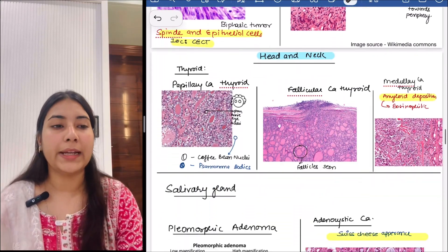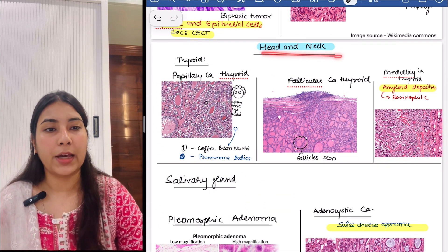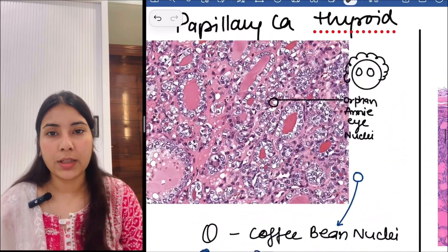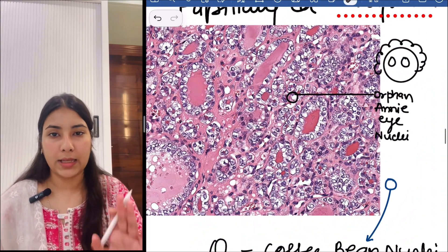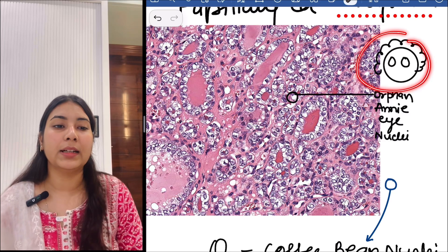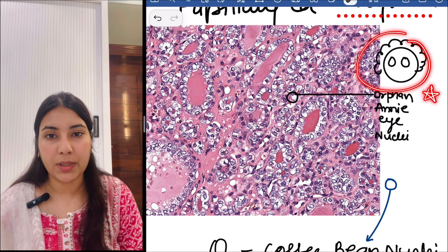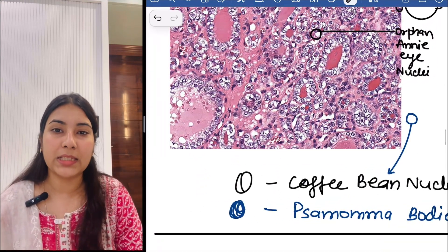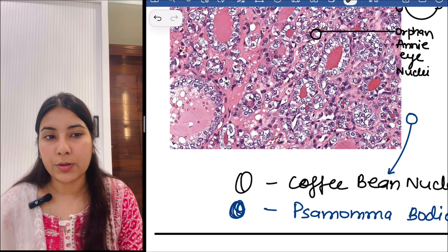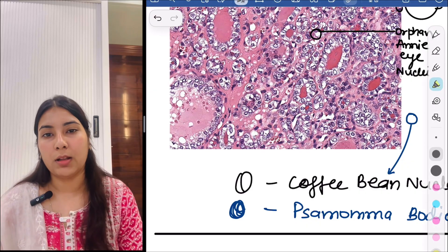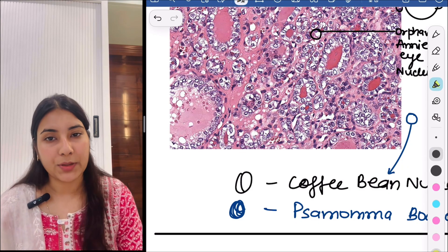Moving forward to head and neck. The first is thyroid. You can see the papillary carcinoma of thyroid — the nucleus is empty, so it is an Orphan Annie eye nucleus. Also we can appreciate that the nucleus has a coffee bean shape. We can also see psammoma bodies. So this is all about papillary carcinoma of thyroid.